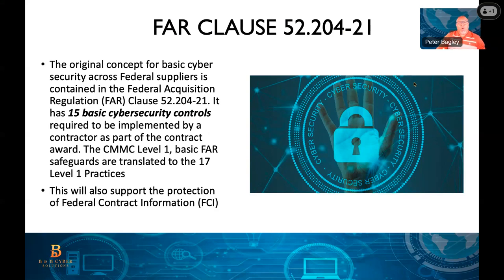The first piece is the FAR clause 52-204-21, the Federal Acquisition Regulation. FAR has many different clauses, and the primary one here is 52-204-21, which has 15 basic security controls. For those familiar with security controls, these are basically things we have to have in place to protect information, people, and things. The CMMC Level 1 basic FAR safeguards are translated to 17 Level 1 practices. FAR also is the guideline for protecting what's called Federal Contract Information, which falls into CMMC Level 1.